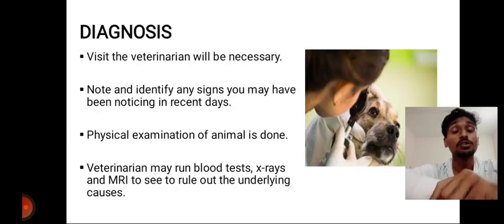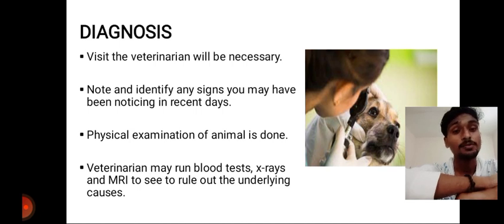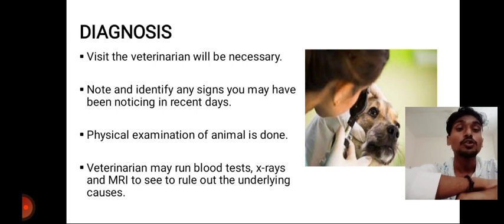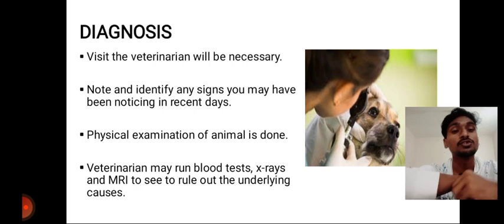For diagnosis, a visit to the doctor will be necessary. Note and identify any signs you may have been noticing in recent days before visiting the doctor. A physical examination is done by the doctor, who may also run blood tests, X-rays and MRI to see and rule out the underlying causes, whether hereditary, injury, or vestibular problems. Doing all these tests, the doctor will determine which problem has caused Strabismus.